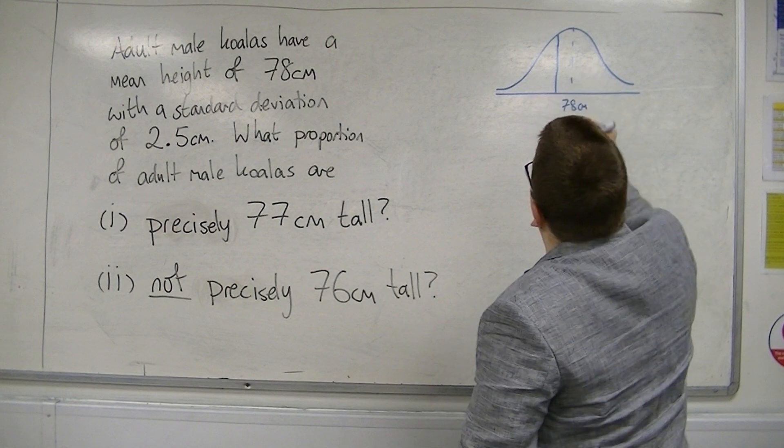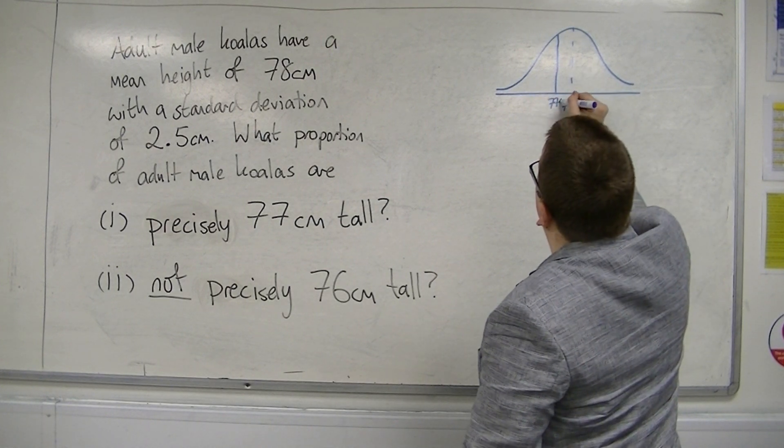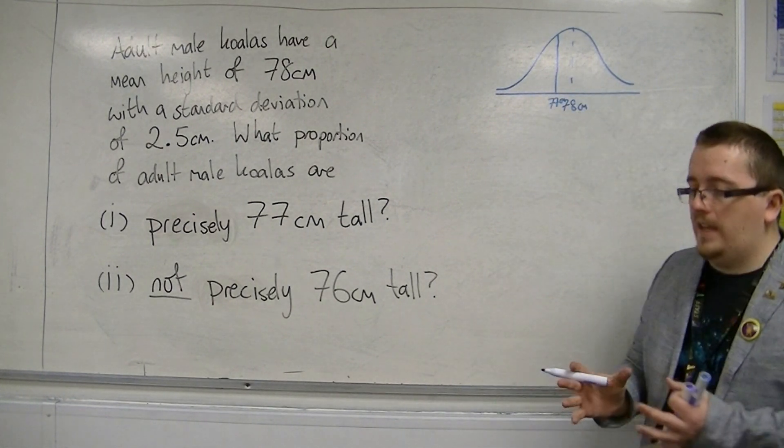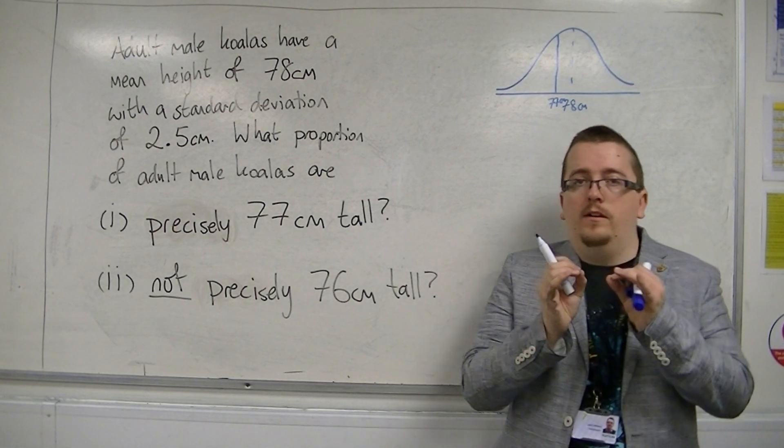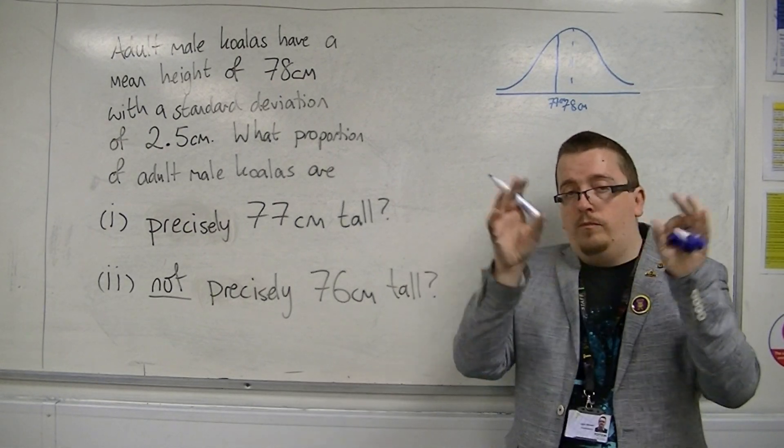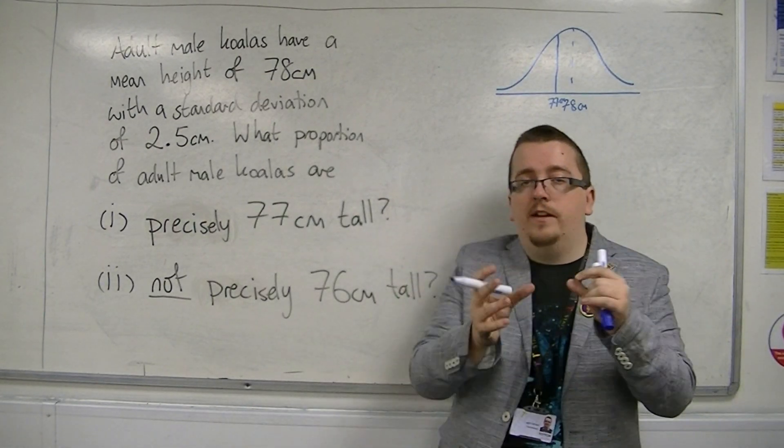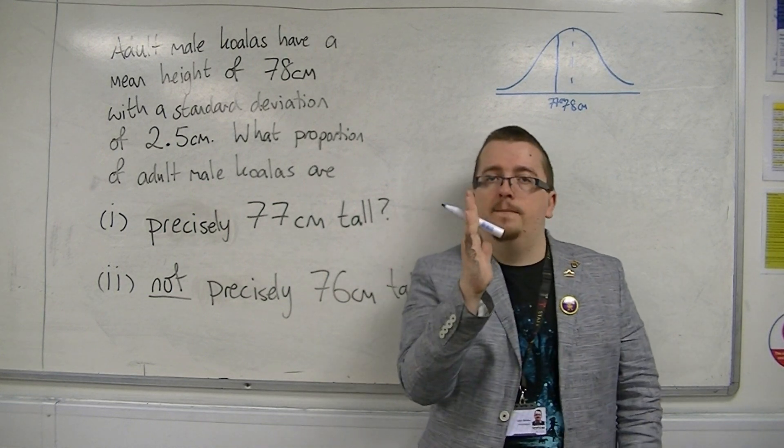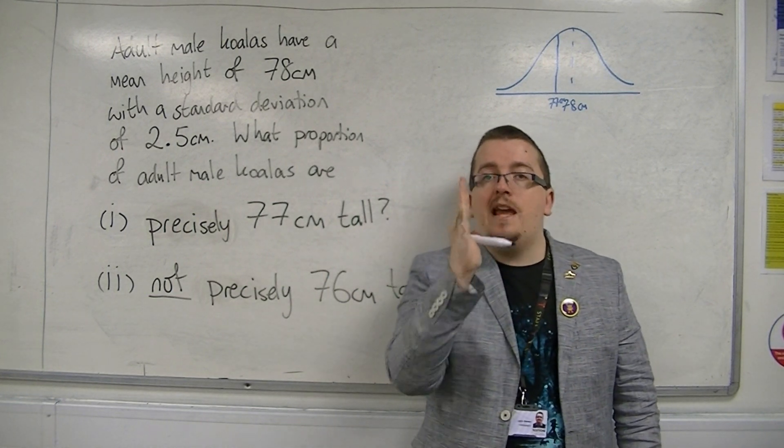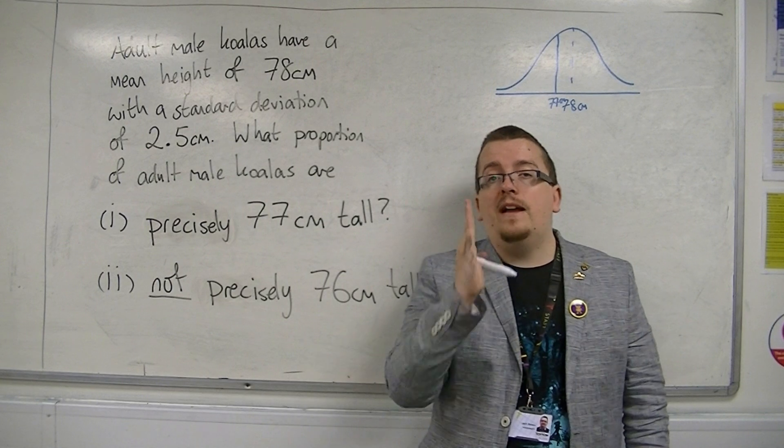There is 77 centimeters. So what we're thinking about is what is the area of the line, because the probabilities are the area under the curve. And if we're just looking at a line, what is the area of a straight line? Well, that is zero.